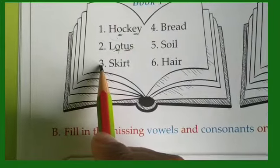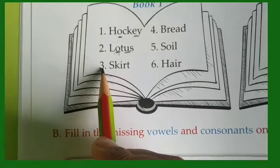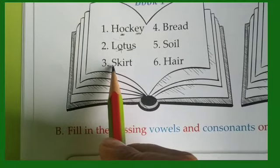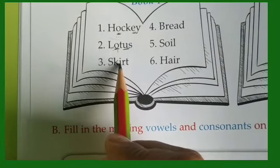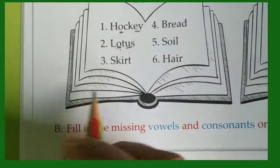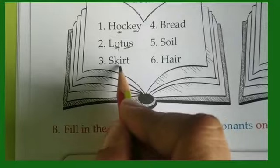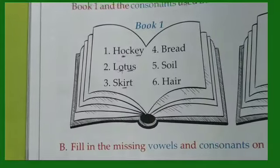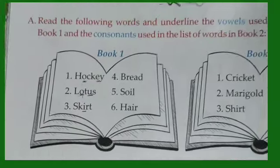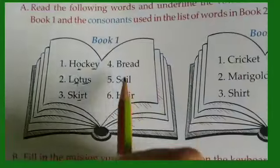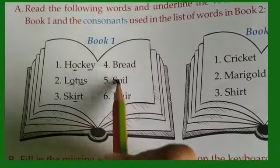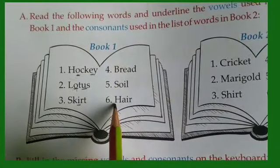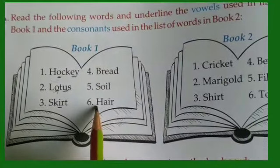Number 3 — skirt. Which one is the vowel? There is only one — I. Numbers 4, 5, and 6 you will do by yourself.